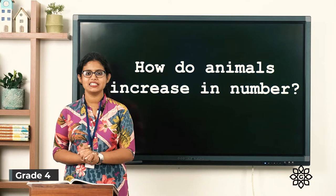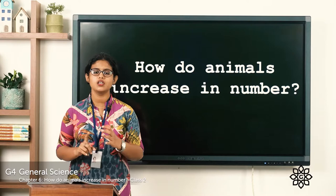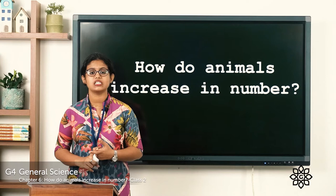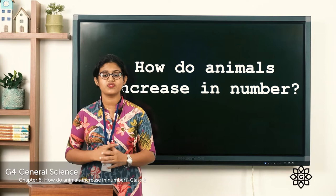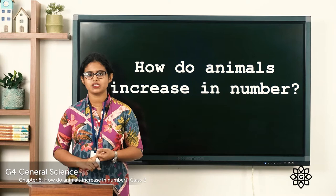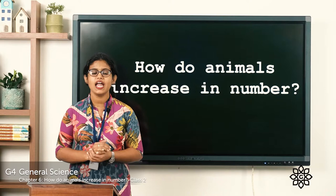Good morning everyone. In the last class we started with the sixth chapter and learnt about reproduction in animals. We learnt that animals reproduce in two ways: first by giving birth, and second by laying eggs. Today we are moving on to a new topic — the life cycle of a butterfly and the life cycle of a frog.